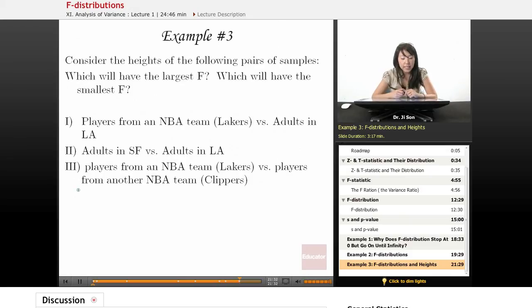Alright, example three. Consider the heights of the following pairs of samples. Which will have the largest F? Which will have the smallest F? Okay, let's think about this. So players from NBA team, Lakers, versus adults in LA.